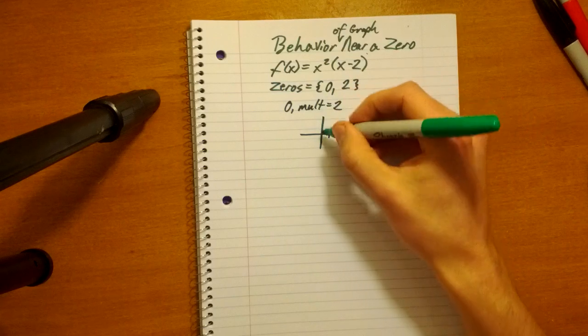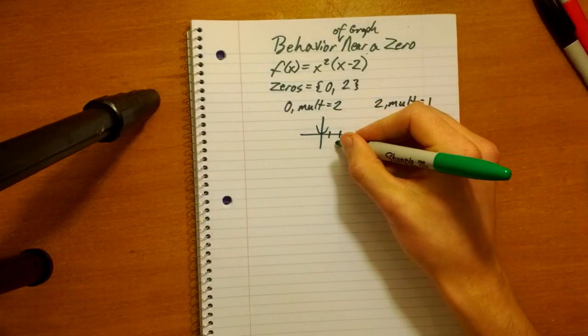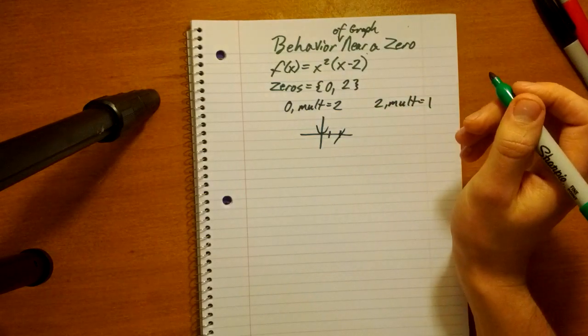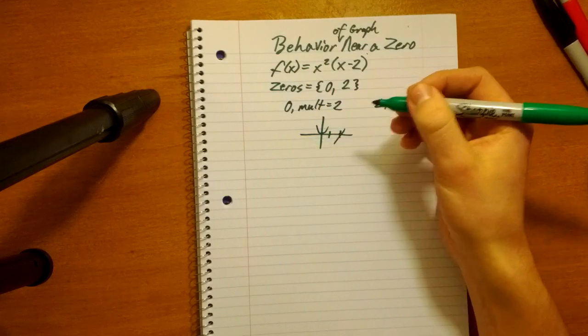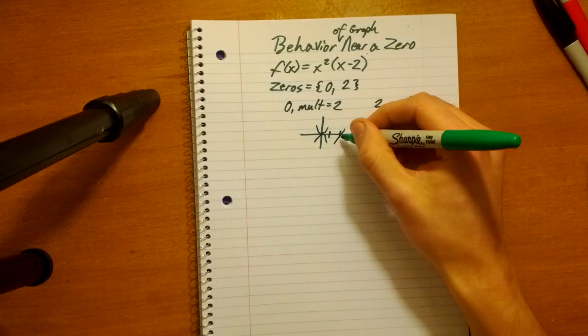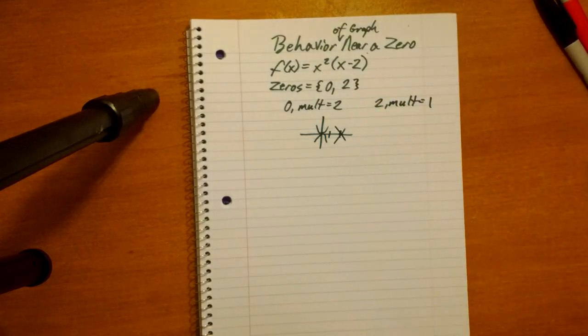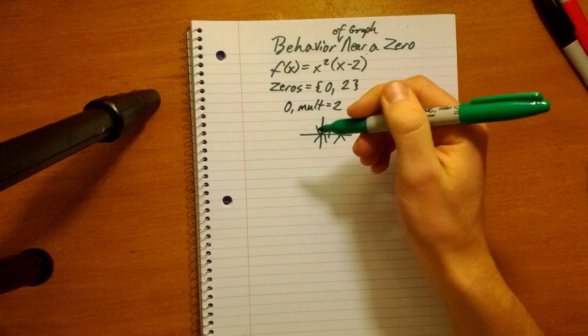So we know that with the even multiplicity, it's going to touch, and the odd multiplicity, it's going to cross. Wait a second, we have a problem here. We don't know, look at this, you could have it touch on this side or that side, or you could have it cross on this side or that side. What are we going to do? Well, what we need to do is find the behavior near a zero.